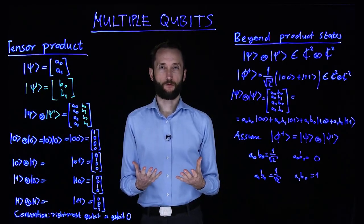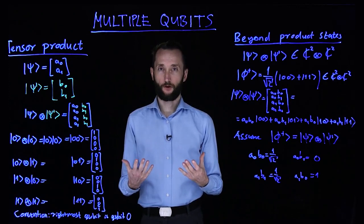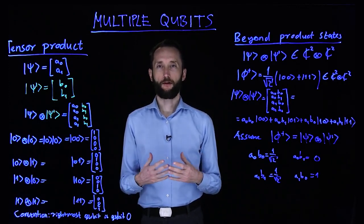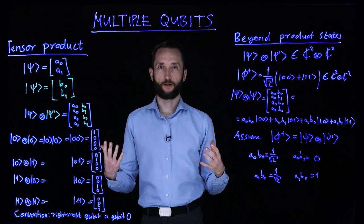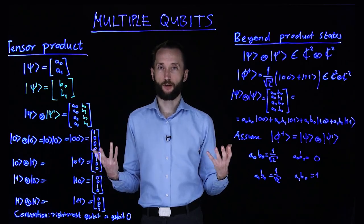We introduced the simplest possible quantum system, a qubit state, and now we try to construct larger probability distributions, or larger states, which are composed of several qubits.